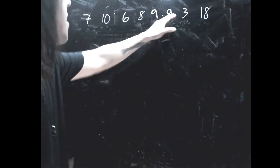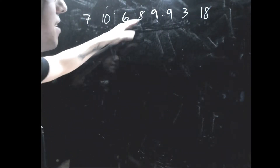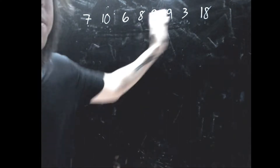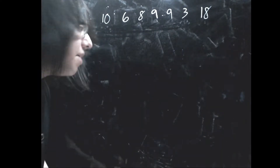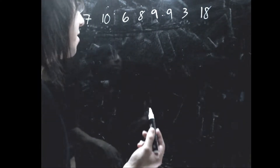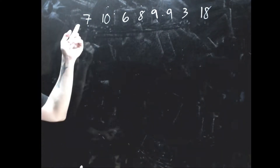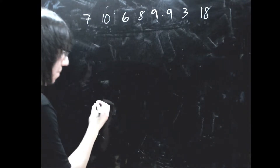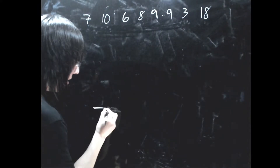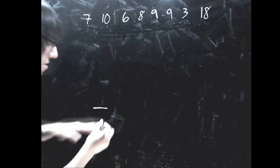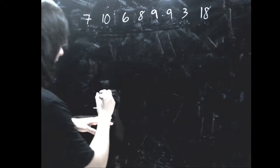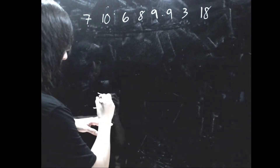Let's say I have an array of numbers here — 7, 10, 6, and a bunch of other numbers in my array. What I'm going to do is take the first number and put it in a pile. So this is just a pile and I'm putting 7 in it.